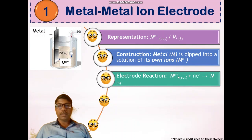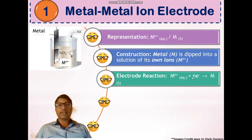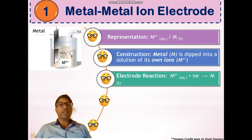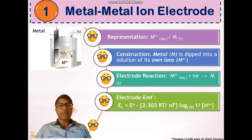In the electrode reaction, M^n+ gains N number of electrons to form M solid — here reduction takes place. The ion accepts N number of electrons and gives solid metal as product, which is deposited on the metal plate.